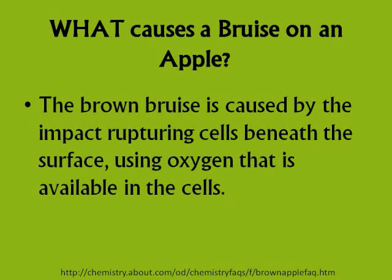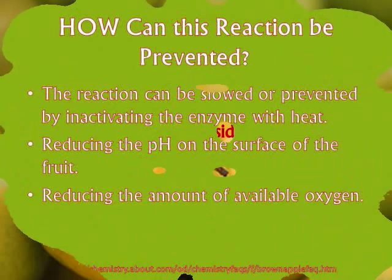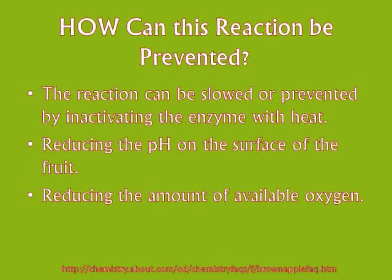Furthermore, natural chemicals with antioxidant properties, such as thio compounds, may also play an important role in fruit browning development. The main reason that an apple doesn't turn brown before it is cut is that the skin of the apple keeps oxygen outside. In addition, the PPO and the phenols are generally located in different cells inside the apple. This reaction is known as enzymatic browning and occurs at warm temperatures when the pH of the plant material is between 5 and 7.